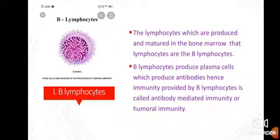B lymphocytes are produced and matured in the bone marrow, that is why they are called B lymphocytes. In some textbooks, they are also called bursa or B lymphocytes, because they mature in the bursa equivalent — which here is the bone marrow.